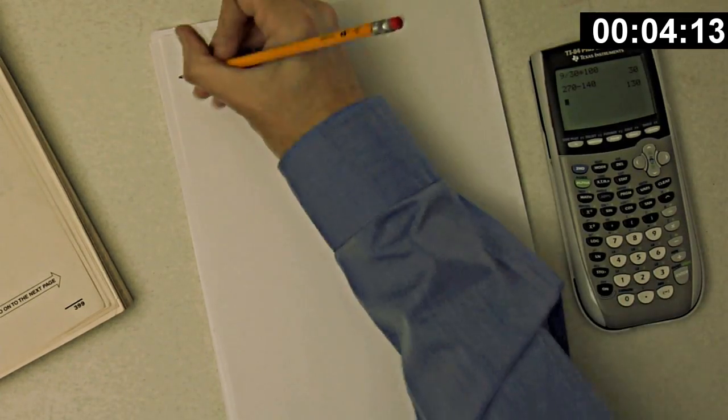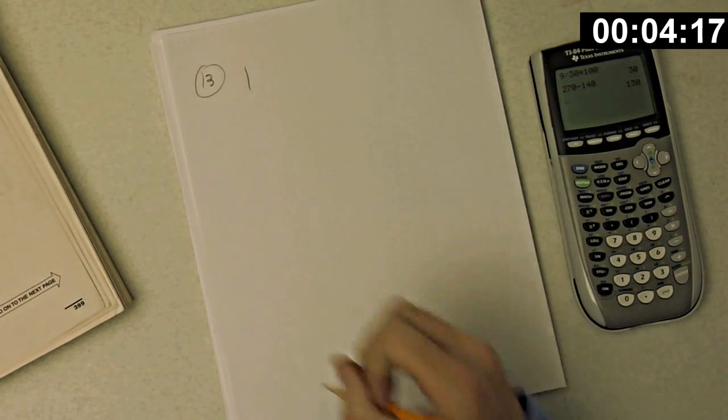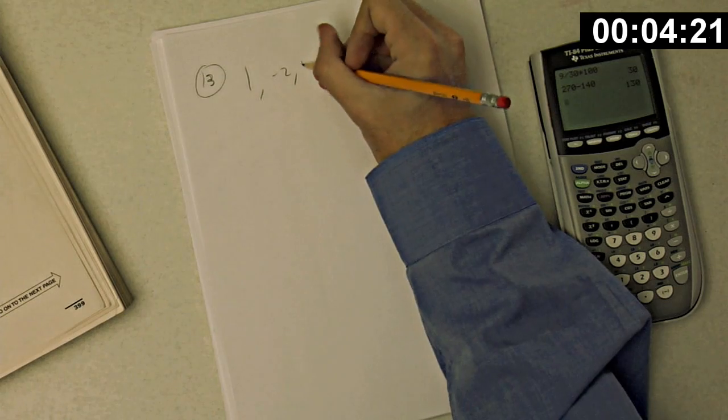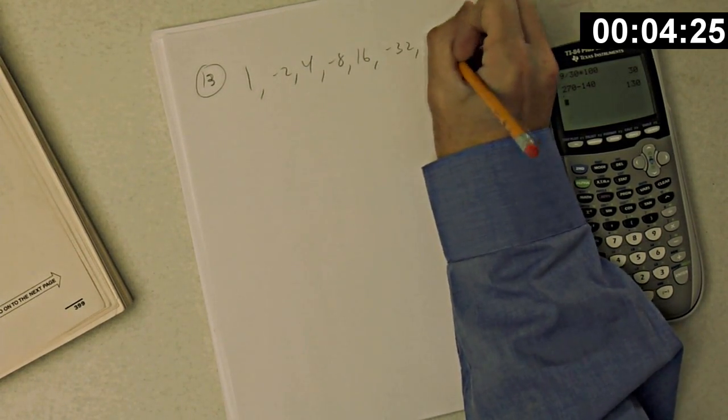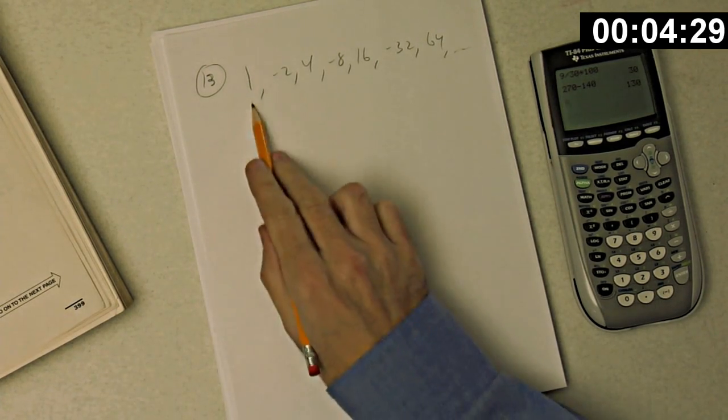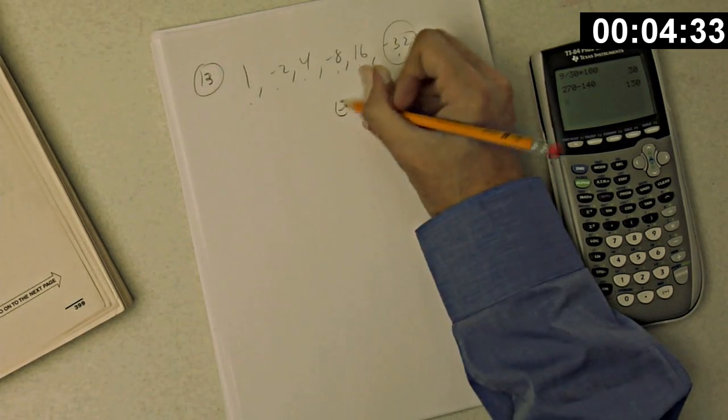All right. Number 13. Okay. The first term of a sequence of numbers is 1. If each term after the first is the product of negative 2 and the preceding term, just keep multiplying by negative 2, negative 2, etc. Okay. What is the sixth term of the sequence? 1, 2, 3, 4, 5, 6, negative 32. That's choice E.